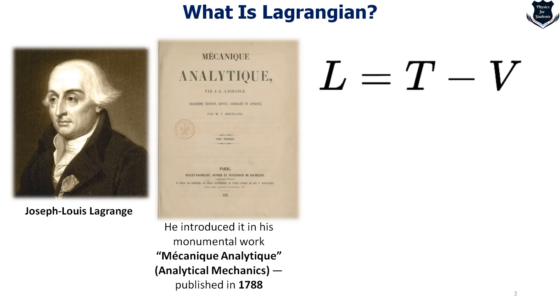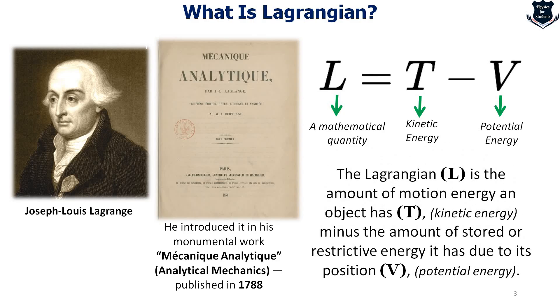The Lagrangian simply looks like this: L equals T minus V, where L is the mathematical quantity, T is the kinetic energy and V is the potential. To sum up in short, we can say that Lagrangian is the amount of motion energy an object has, which is denoted by T, the kinetic energy, minus the amount of stored or restricted energy which is due to its position, V, which is the potential energy.